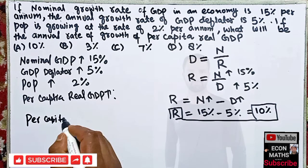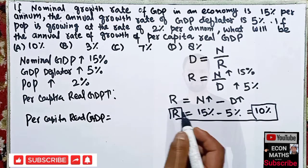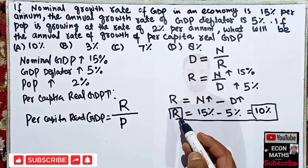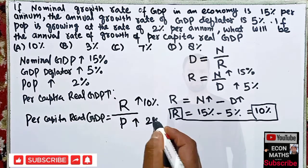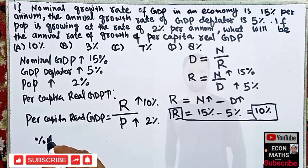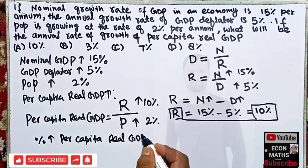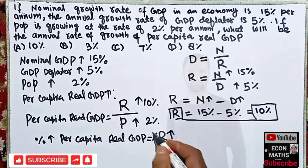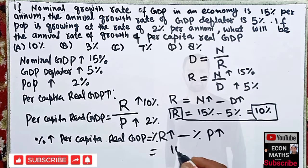Now we have to find the per capita real GDP increase. Per capita real GDP equals real GDP divided by population. Real GDP has increased by 10 percent and population has increased by 2 percent. The percent increase in per capita real GDP equals the percent increase in real GDP minus the percent increase in population — that is, 10 percent minus 2 percent.